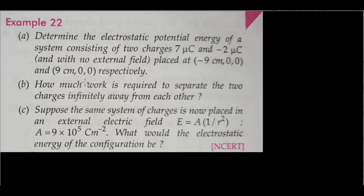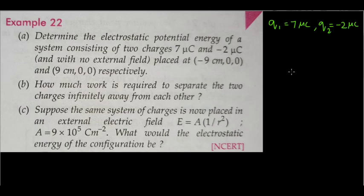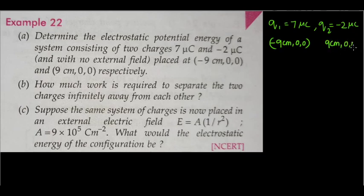It is given that we have two charges: q1 equal to 7 micro coulombs and q2 equal to minus 2 micro coulombs. The position of q1 is at (minus 9 cm, 0, 0) and the position of q2 is at (plus 9 cm, 0, 0).